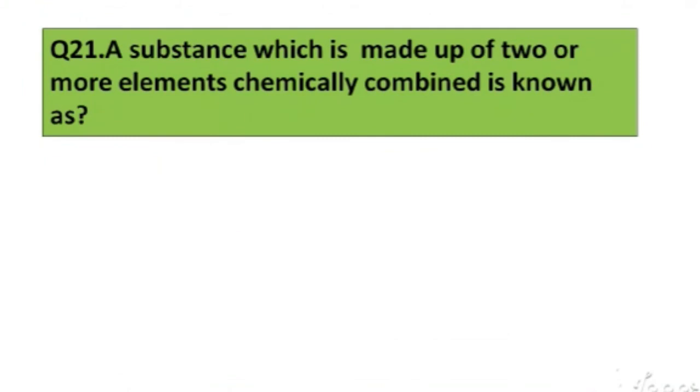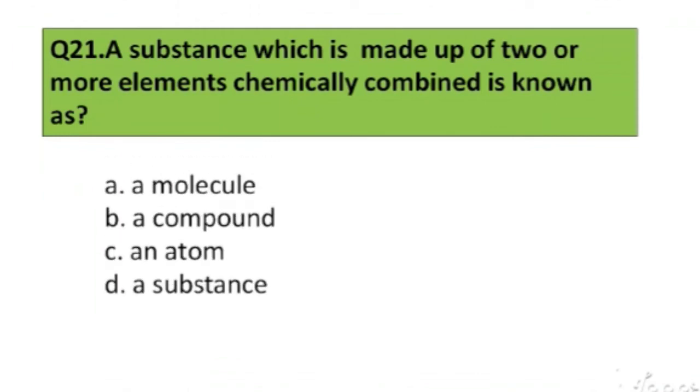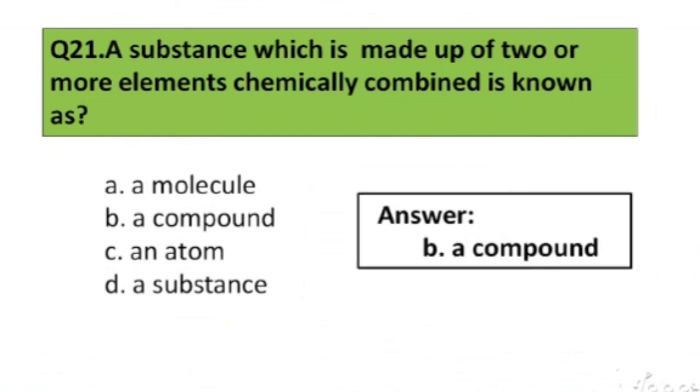Question number 21. A substance which is made up of two or more elements, chemically combined is known as: A. Molecule, B. A compound, C. An atom, D. A substance. The right answer is option B, A compound.